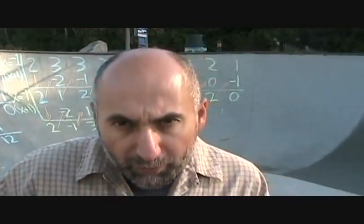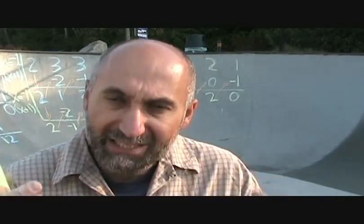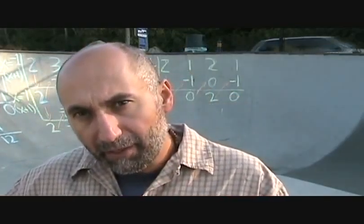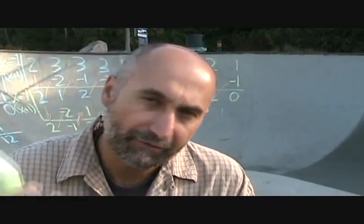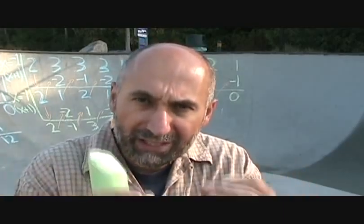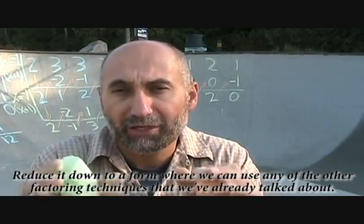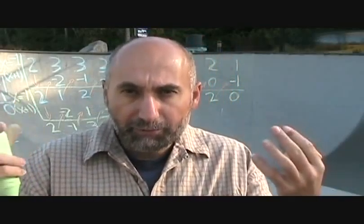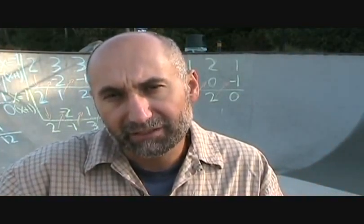We started with a degree-5 polynomial and have now done three successful synthetic divisions, reducing it from degree 5 down to a quadratic — and that's exactly what we want. For any polynomial of degree higher than 2, we keep doing synthetic division until we get down to a quadratic or an expression we can factor using techniques like difference of squares.